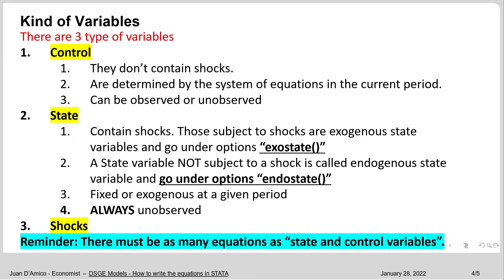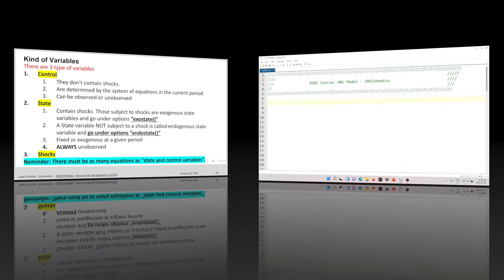Finally, we have shocks. So these are the three types of variables we need to specify in Stata: control variables, state variables, and shocks. Just as a reminder, there must be as many dynamic equations as state and control variables.